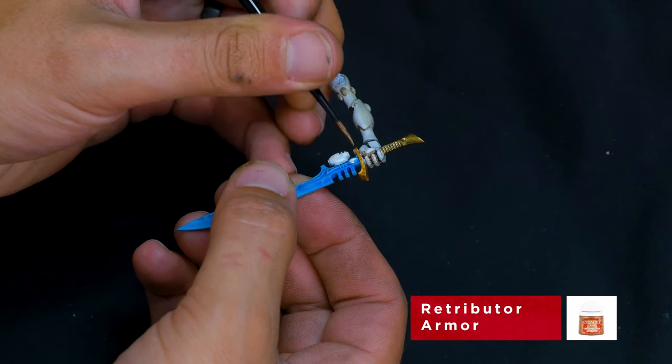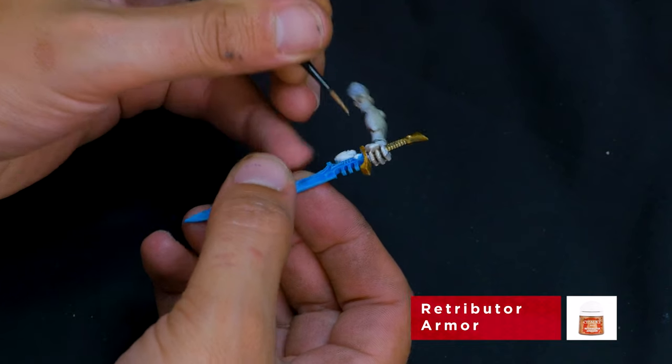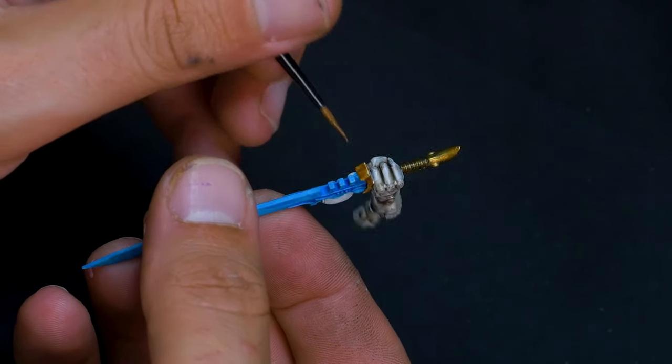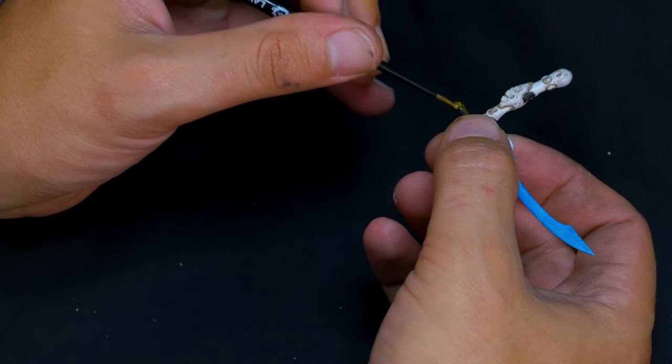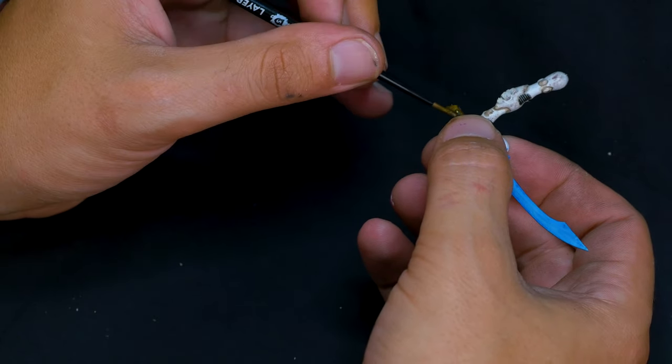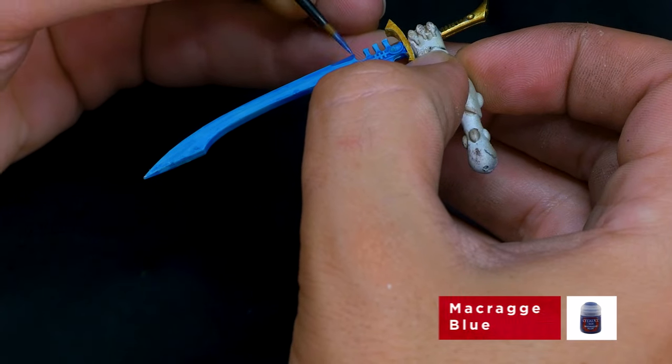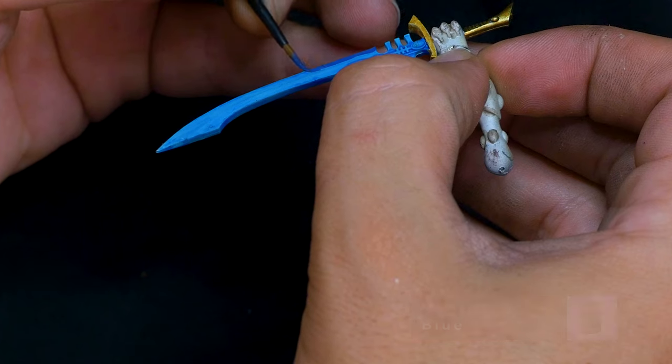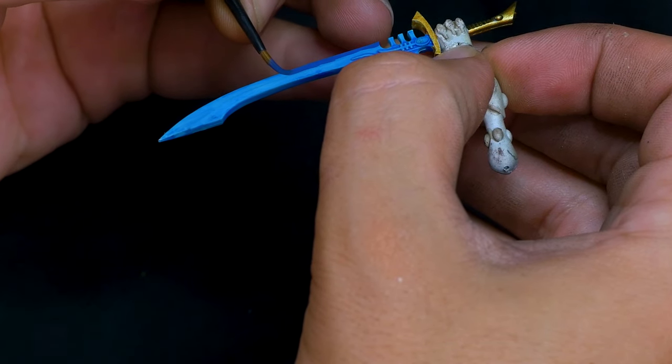Once that initial base was done, I painted the hilt gold using Retributor Armour. The next step was to vary up the blue a little bit, so I took out this Macragge Blue, which is a darker blue, and went around the edge of the blade.